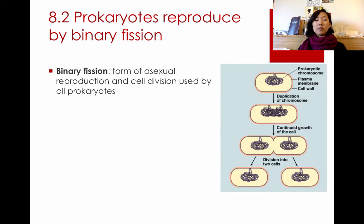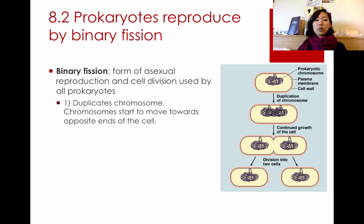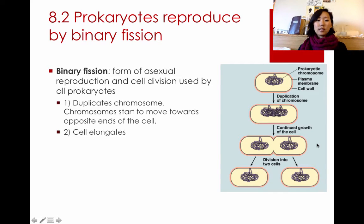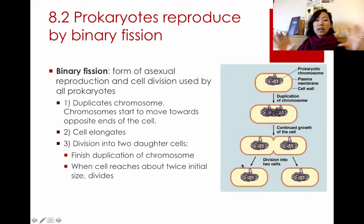Prokaryotes divide by something called binary fission, which is a form of asexual reproduction. The first step is when the original parent prokaryotic cell duplicates its chromosomes and they start to separate to opposite sides. The cell then elongates to about double its size, and once it reaches that size, it pinches in the middle and divides into two daughter cells that are exactly the same as the parent cell.